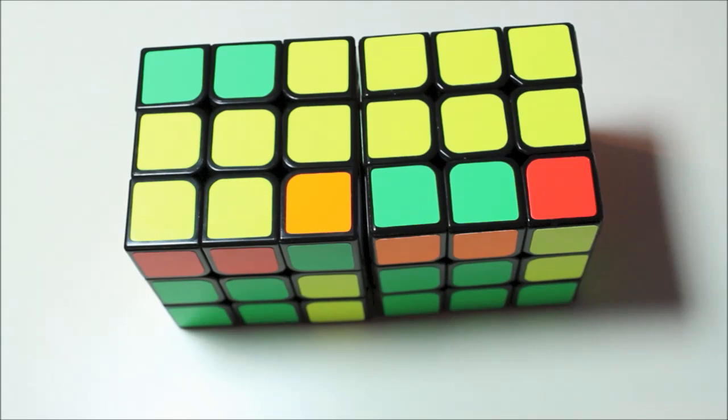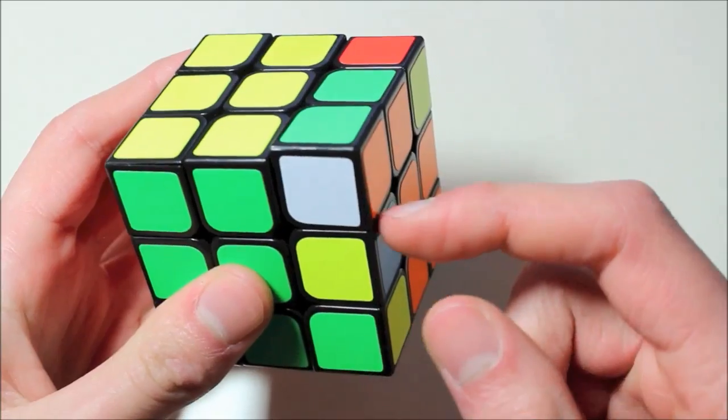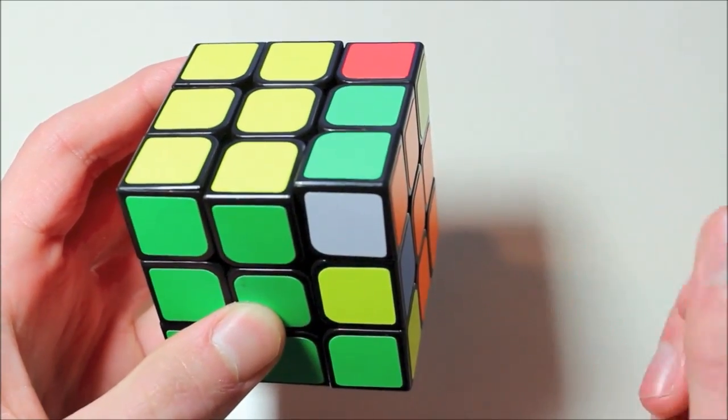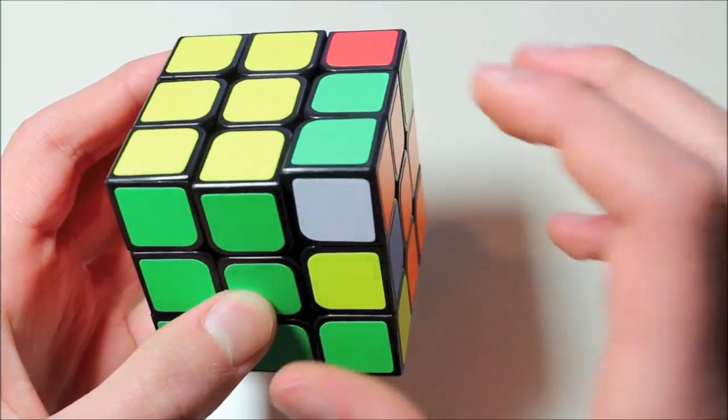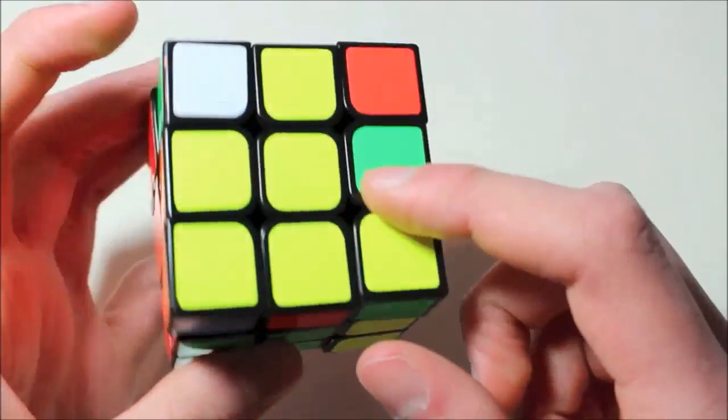When you do one of these, the result is an F2L case in which at least one of the pieces that makes up the pair is in the top layer. Then, to get these pieces back into one of those eight setups that I've been talking about, all you have to do is the inverse of the moves that you just did. For example, here I would do the inverse of each trigger and look for the resulting cases. For instance, doing R U prime R prime gives this case.